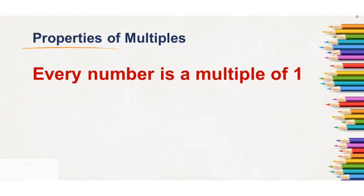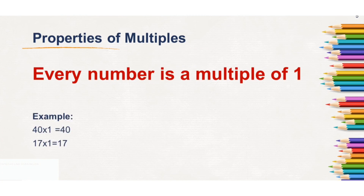Now let us understand the properties of multiples. Every number is a multiple of 1. Whenever we look at the tables, we multiply with 1, so every number is a multiple of 1. For example, 40 by 1 is 40, and 17 by 1 is 17, so every number is a multiple of 1.